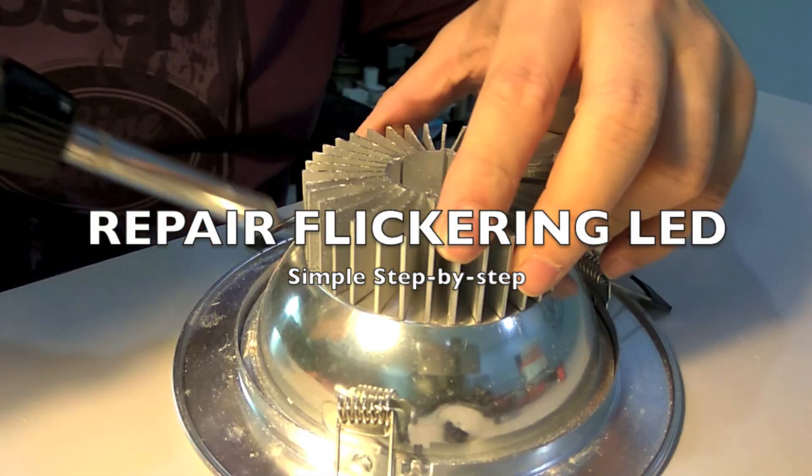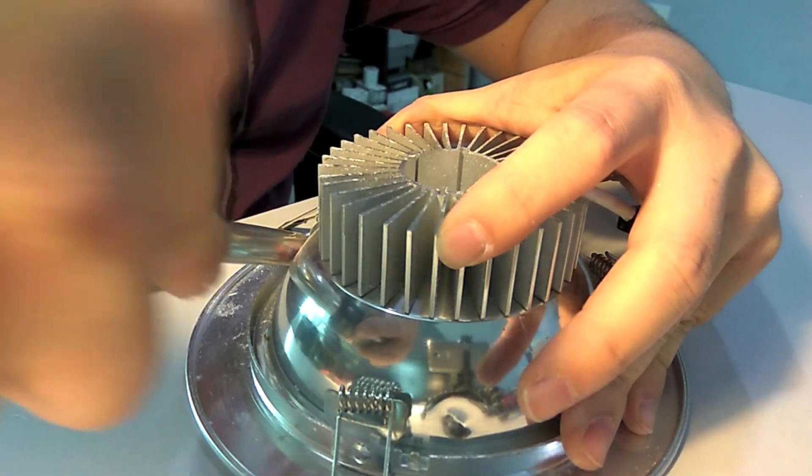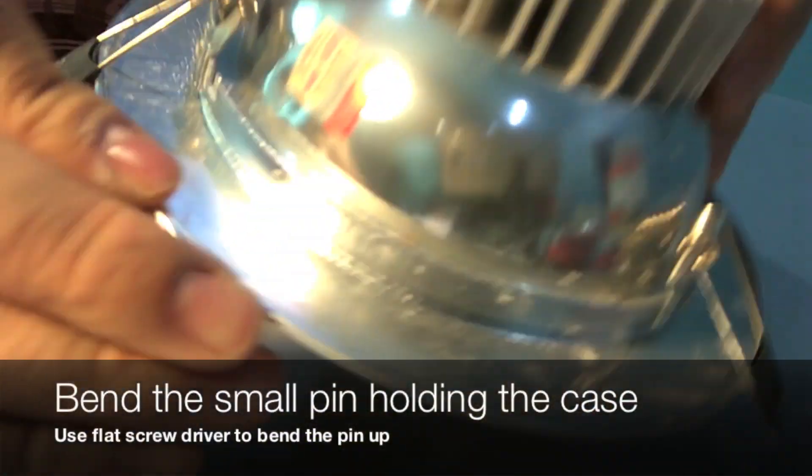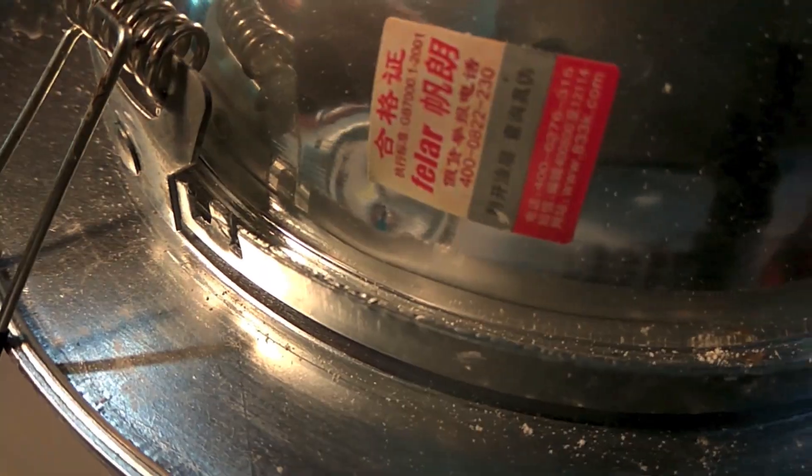This is a short video showing you how to repair your spoiled or flickering LED downlights. Remove the LED from the housing and just check on your LED to see how the LED works on your unit.